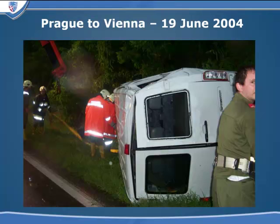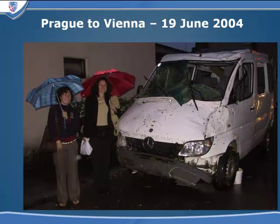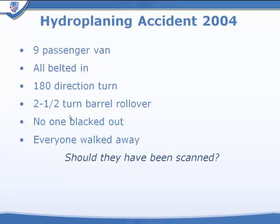Let's take a practical clinical case — an accident that occurred in a motor vehicle driving from Prague to Vienna in June 2004. My wife and daughter are deliriously happy because they weren't killed. The vehicle was no longer operable and all windows and doors were broken. This was a nine-passenger van. Everyone was belted in. We experienced a hydroplaning problem, a 180-degree horizontal turn, and a two-and-a-half barrel rollover. Nobody blacked out and everyone walked away. Should we have been scanned?